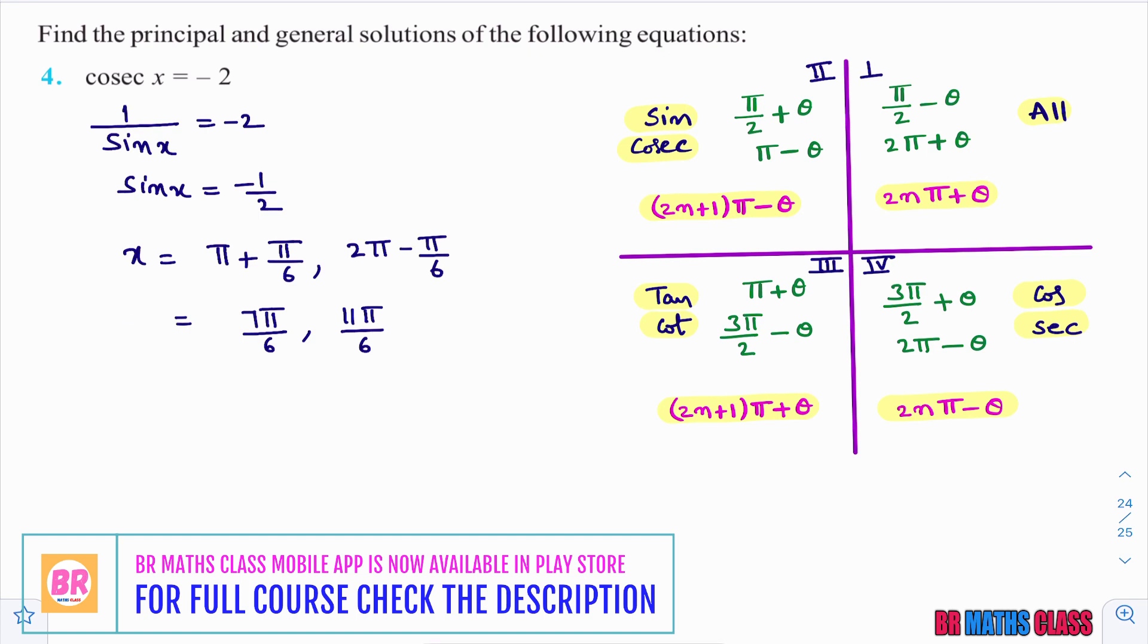What are these? These are the values which lie in this interval: the interval closed 0, open 2pi. These are the values that lie in this interval and satisfy this trigonometric equation. Therefore, principle solutions of given trigonometric equation are 7pi by 6, comma, 11pi by 6.